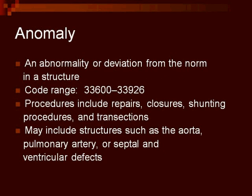Code range 33600 through 33926 are codes for anomalies. Anomalies are an abnormality or deviation from the norm of a structure. Procedures include repairs, closures, shunting, and transections, and include procedures on the aorta, pulmonary artery, or septal and ventricular defects.